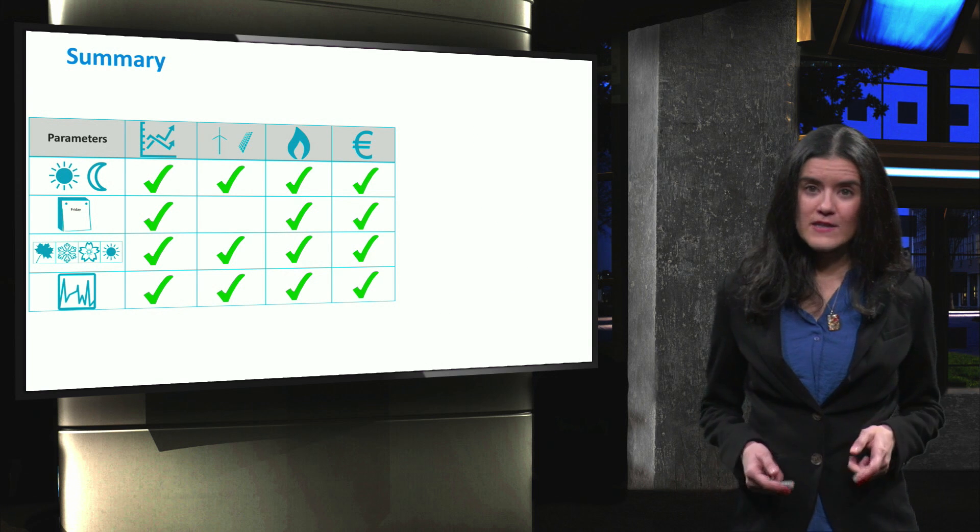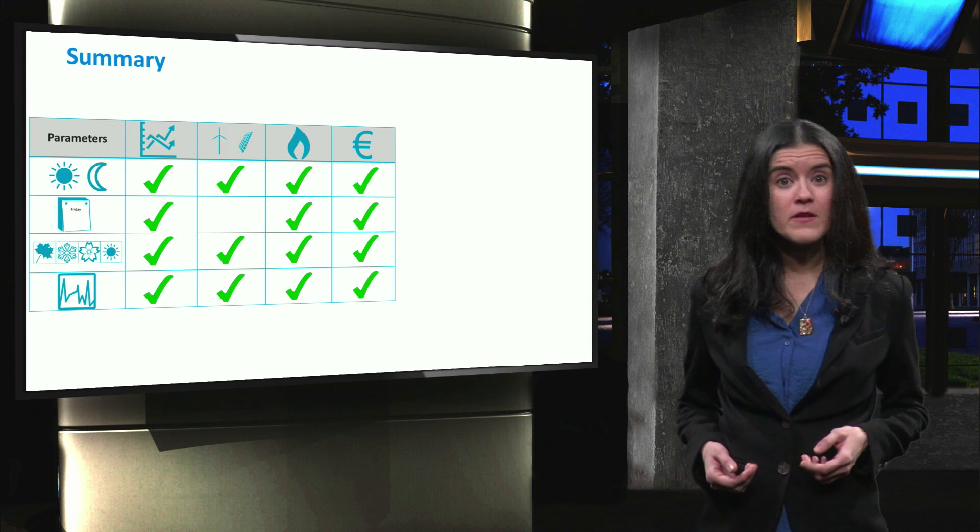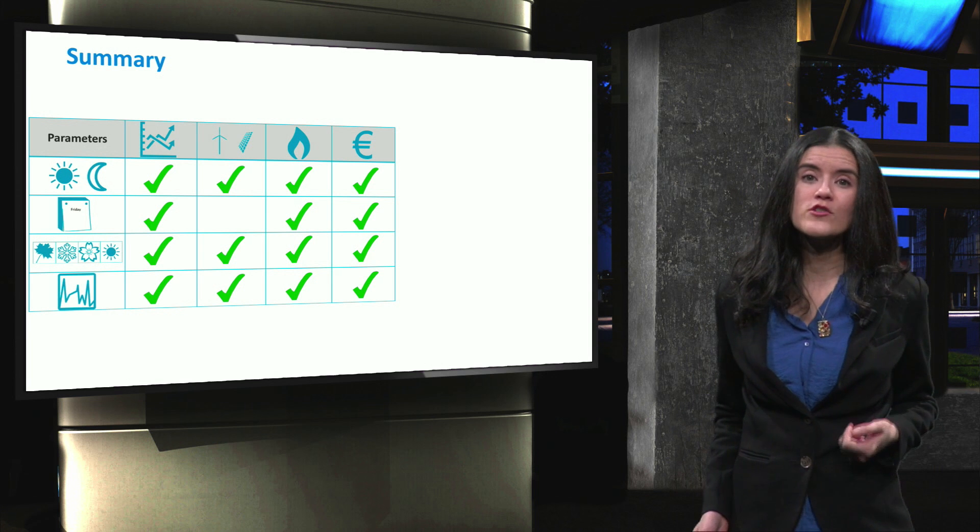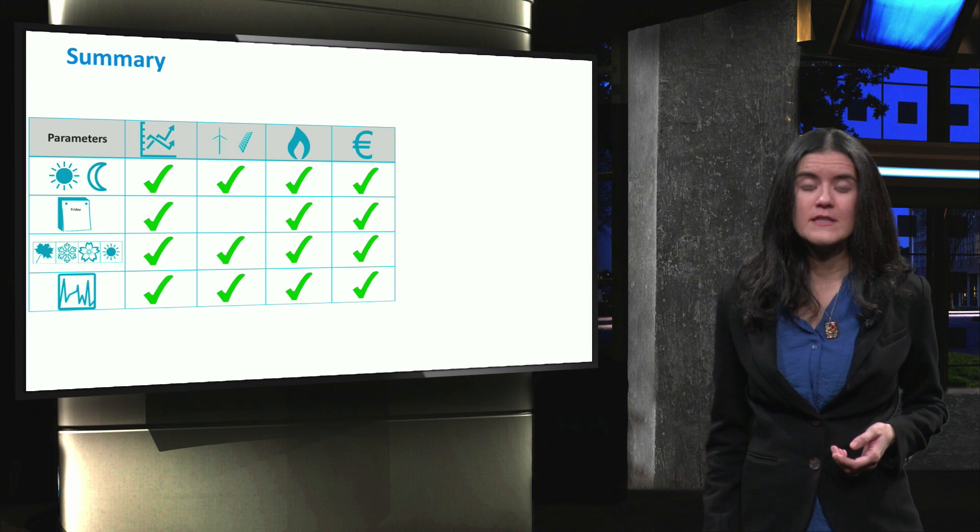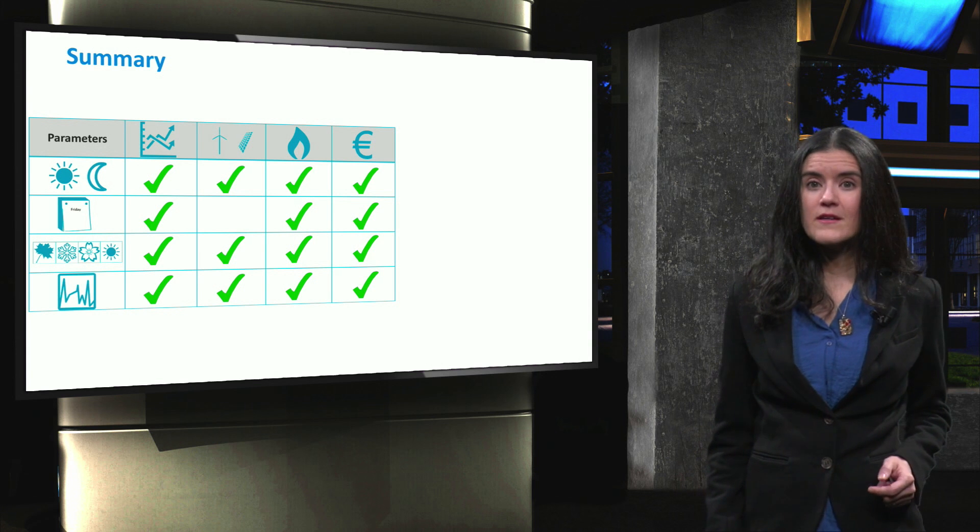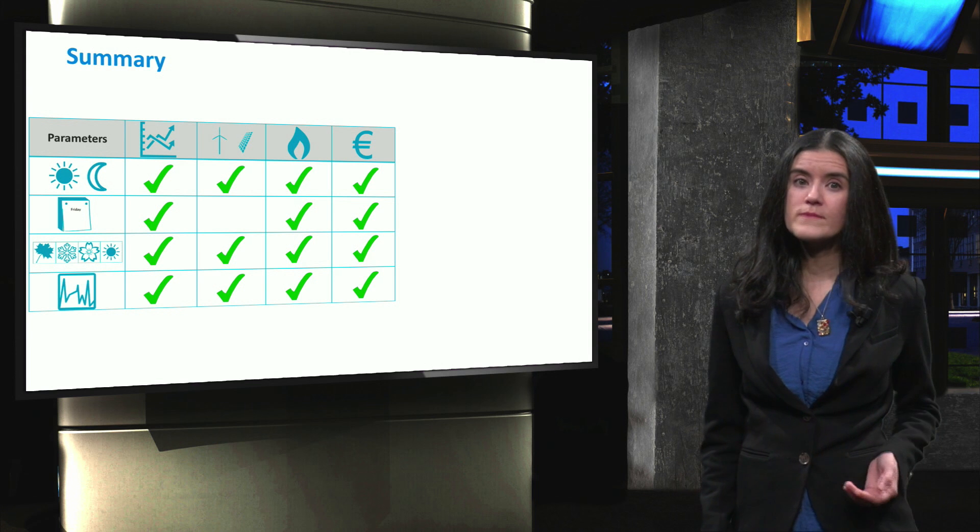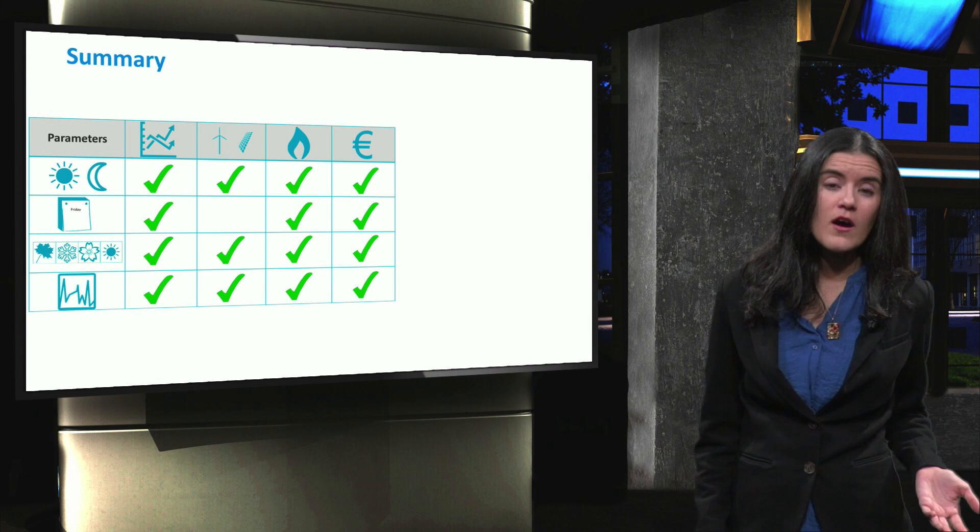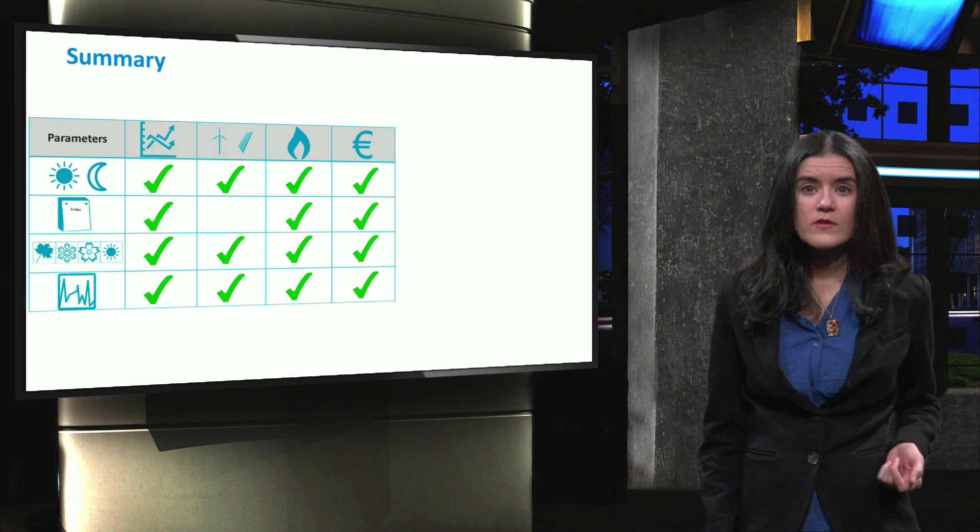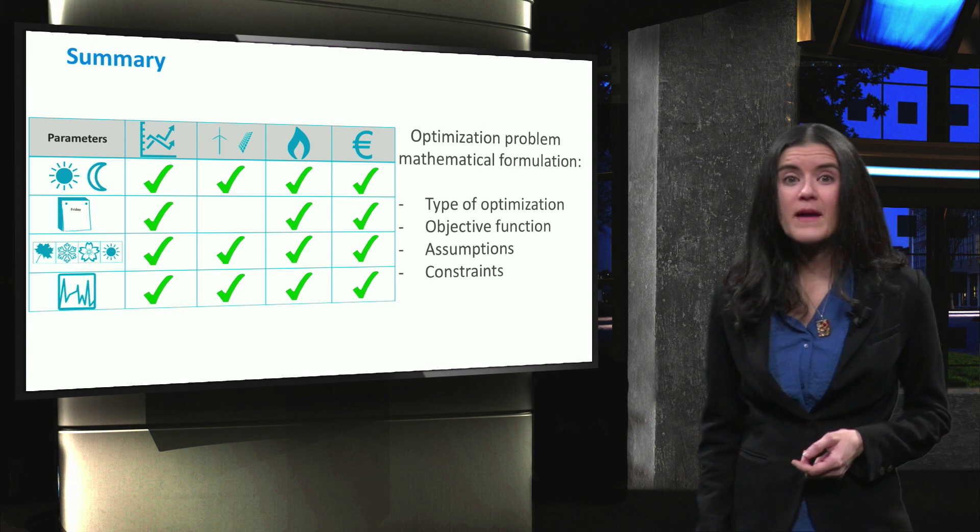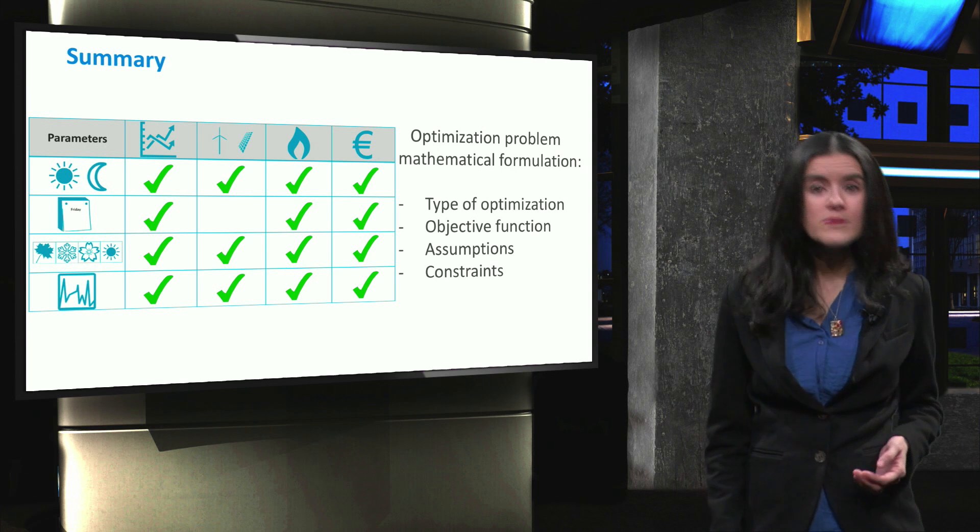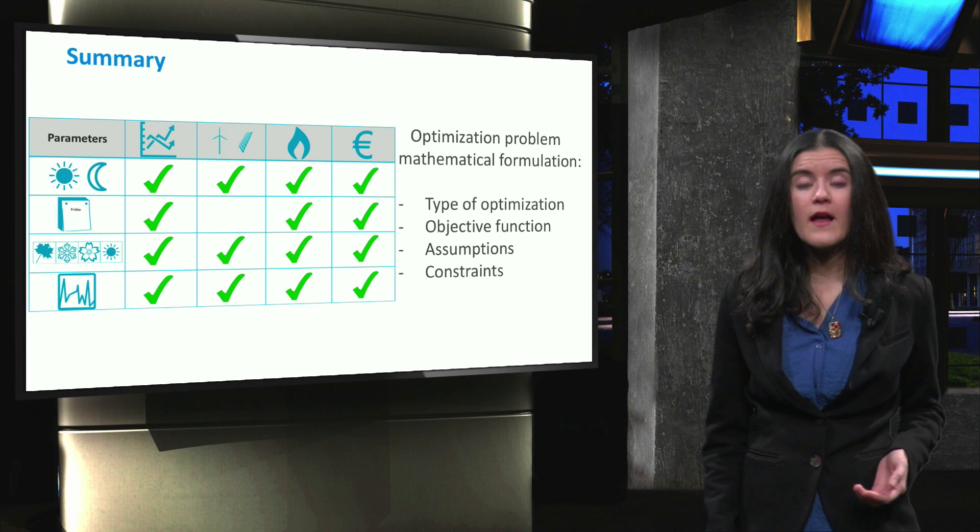To sum up, in this lecture we have seen how various parameters affect the forecasting of electricity demand, renewable energy sources production, heat demand, and electricity prices. We also mentioned the different optimization techniques implemented in microgrids and their objective, being the minimization of environmental capital storage or miscellaneous costs. We also introduced the steps needed for a mathematical formulation of an optimization problem, such as the selection of assumptions, objective function, and constraints.